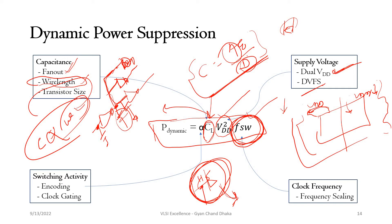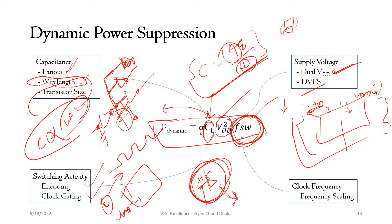The switching activity (alpha factor) also contributes to dynamic power — if a signal switches fast, it dissipates more power. Circuit switching can be minimized through encoding or clock gating. By encoding, we map data so that toggling is less frequent, which directly reduces dynamic power. With clock gating, even if data is not changing across many clock cycles, if the clock is still applied to the flip-flop, the internal nodes are still charging and discharging unnecessarily. If there is no data toggling, the clock can be removed, eliminating that switching and reducing dynamic power.